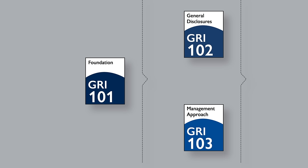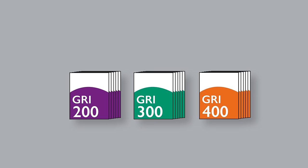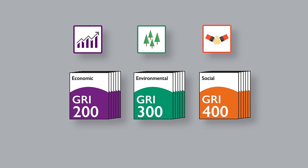There are three universal standards used by every organization that makes a sustainability report. And there are three series of topic-specific standards which cover economic, environmental, and social impacts.